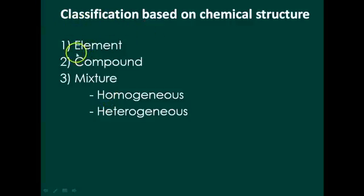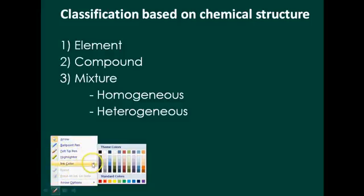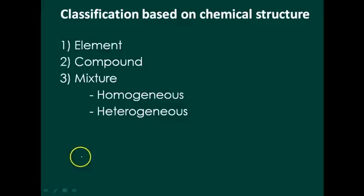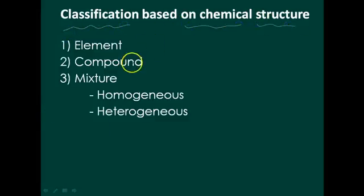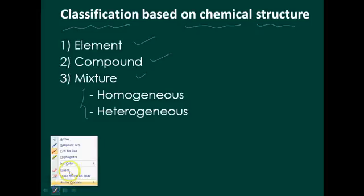The next classification is based on the chemical structure. Classification based on chemical characteristics or chemical structure is divided into element, compound, and mixture. Mixture is further divided into homogeneous mixture and heterogeneous mixture.